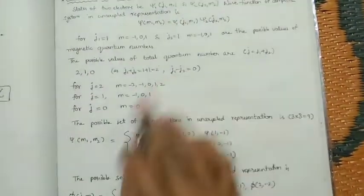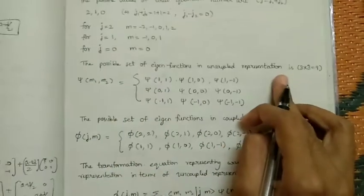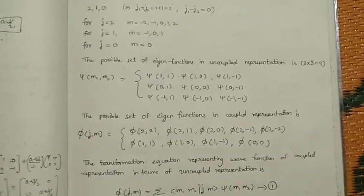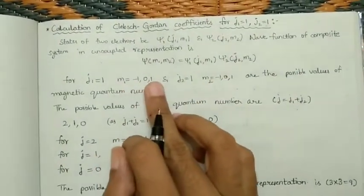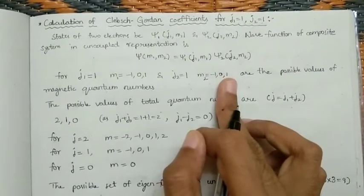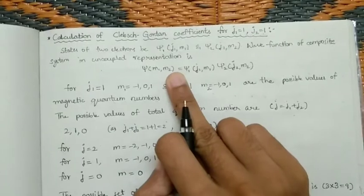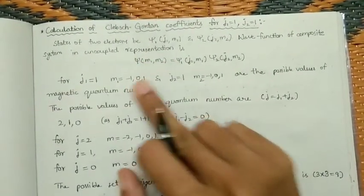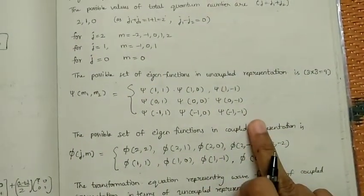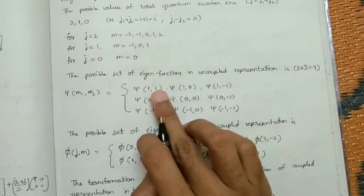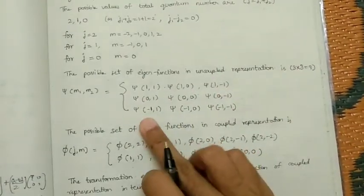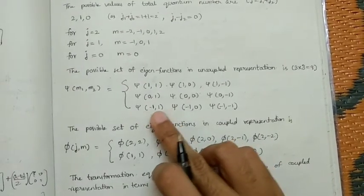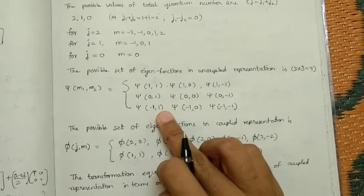These are the possible j and m values. In the uncoupled representation, m1 has three values and m2 also has three values, and xi of (m1, m2) is the uncoupled form. The possible combinations of m1 and m2 is three times three — nine total. When m1=1, m2 takes 1, 0, -1; when m1=0, m2 takes 1, 0, -1; and when m1=-1, m2 takes 1, 0, -1.